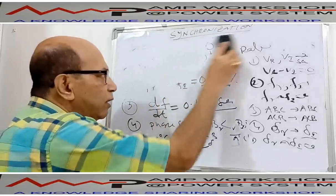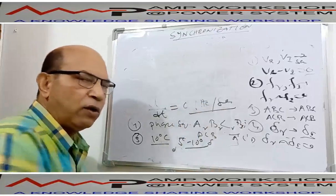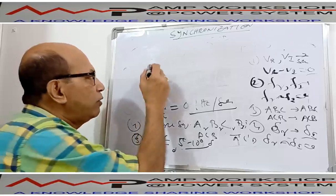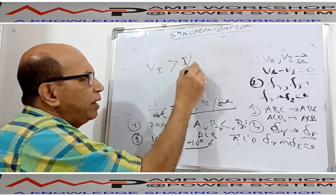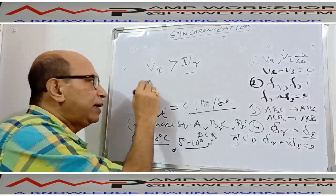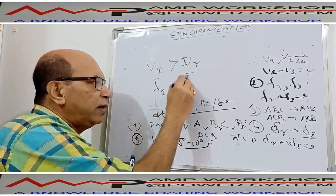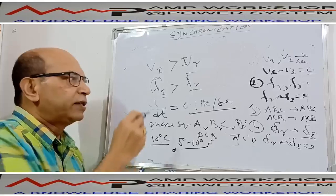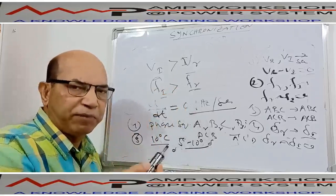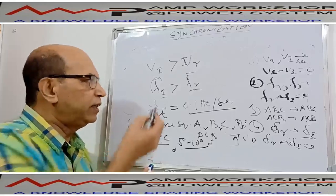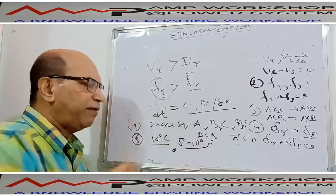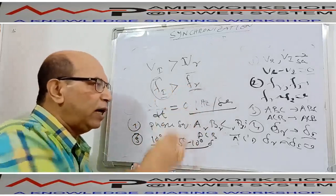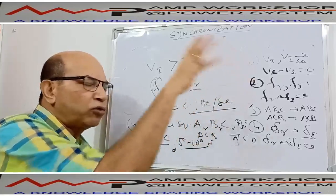In addition, during synchronization, there are two more points required for stable synchronizing operation. Number one: the incoming machine voltage should be slightly more than the running voltage — VI slightly more than VR, maybe within 0.2 to 0.3 percent. Number two: incoming frequency FI should be slightly more than running frequency — maybe 50.2 Hz incoming versus 50 Hz running. If these conditions are maintained, we can successfully close the incoming generator breaker and both will supply the load.